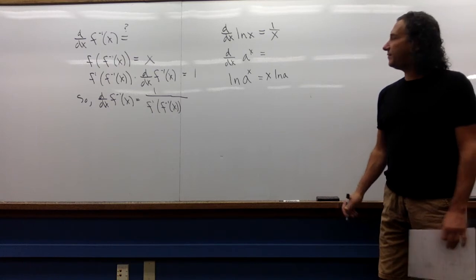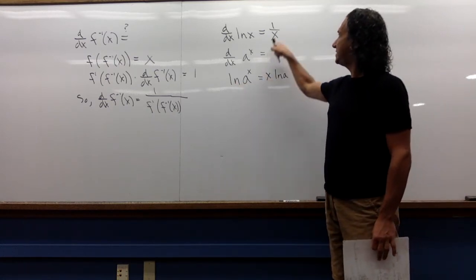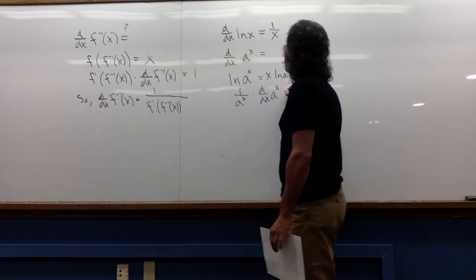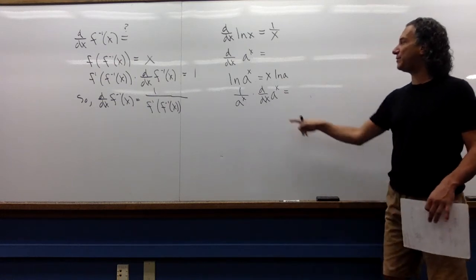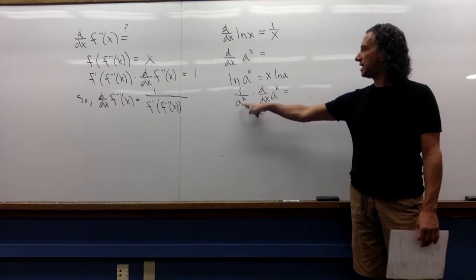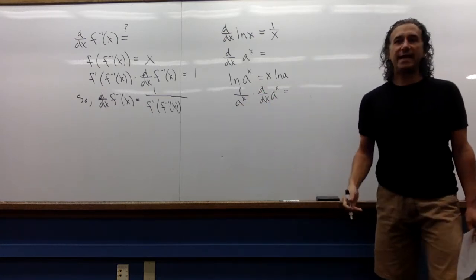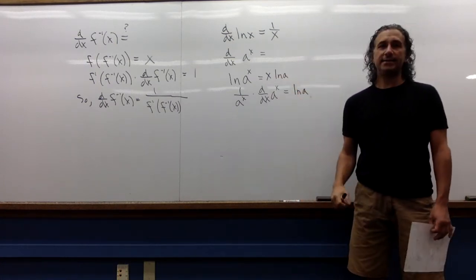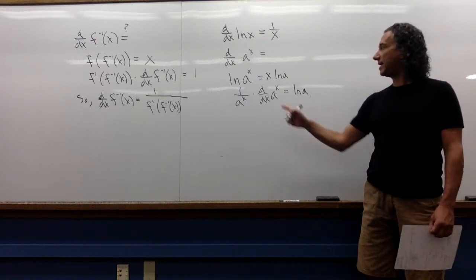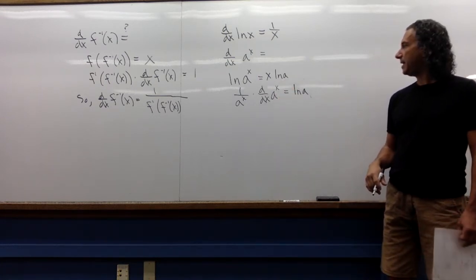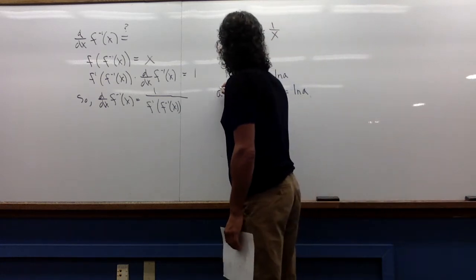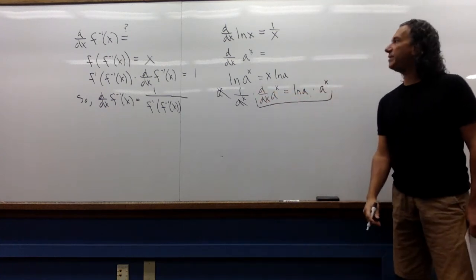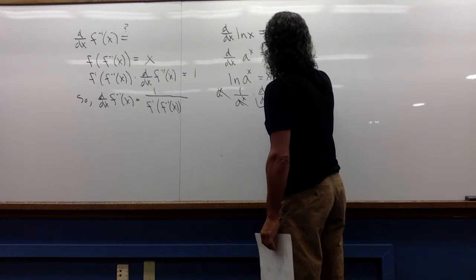Hopefully you gave it a shot. You took the derivative of both sides. The derivative of ln of stuff is 1 over stuff times the derivative of that stuff — we don't know the derivative of a to the x, so I'll just write it like that. The derivative of x ln of a is just ln of a, because this is just linear, like 10x, so the derivative is that slope, which is ln of a. Then we multiply both sides by a to the x, and we get the formula: the derivative of a to the x is a to the x times the natural log of a.